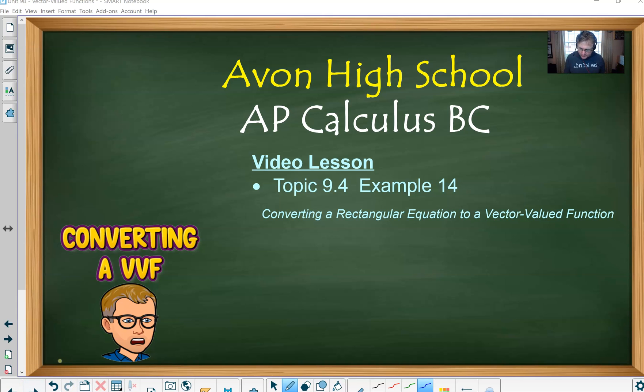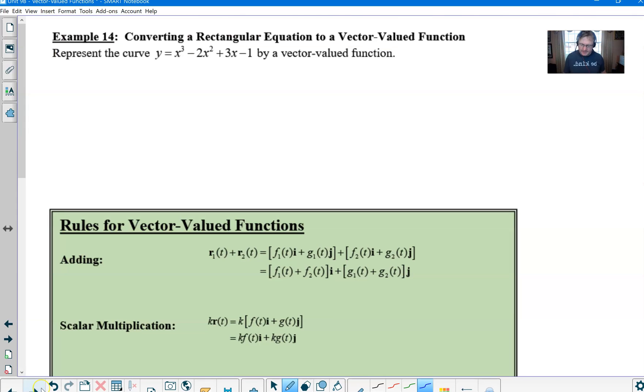The example starts with this curve: y equals x cubed minus 2x squared plus 3x minus 1. That certainly is rectangular. We want to convert that to a vector-valued function. What I'm trying to convey here is that the process of doing that is no different than the process that you used to convert rectangular to parametric.